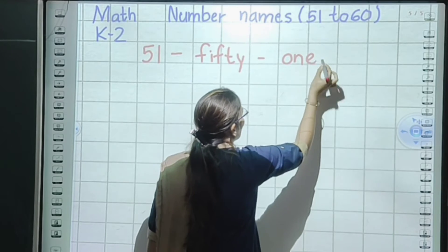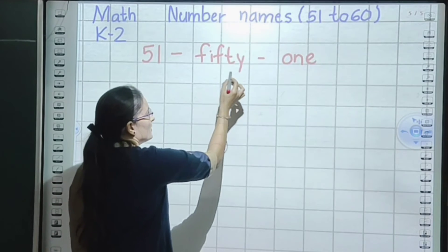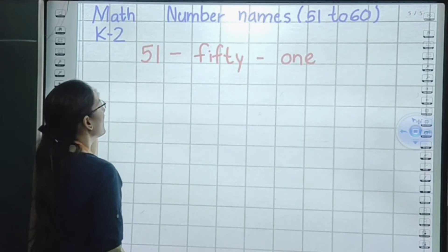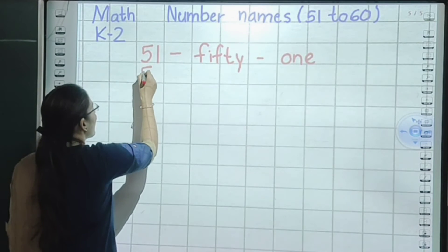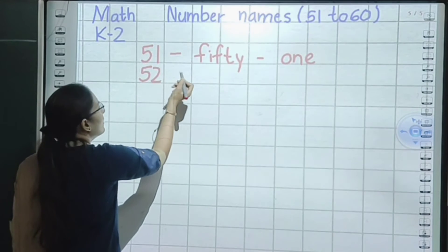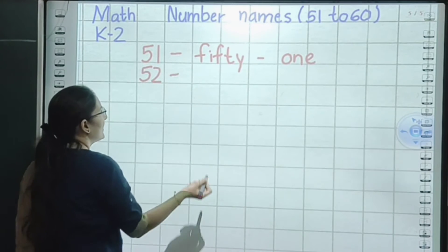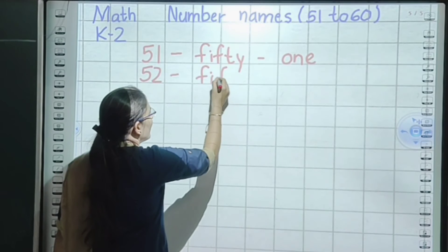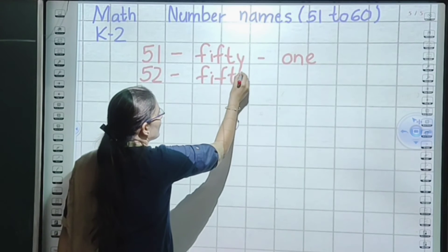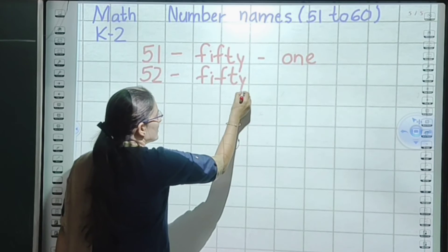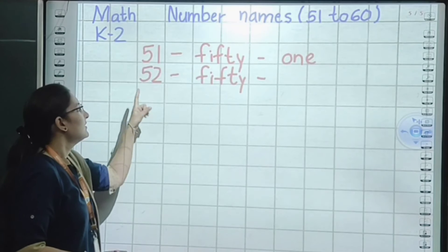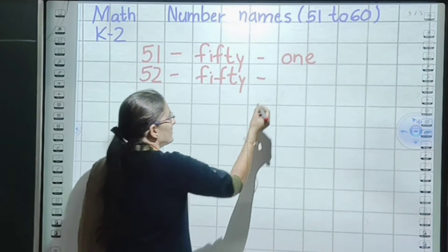Let's start the spelling of 50: F, I, F, T, Y — fifty. Small sleeping line. Now we will write the spelling of 1: O, N, E — one. So 51 is written as: fifty, small sleeping line, one.